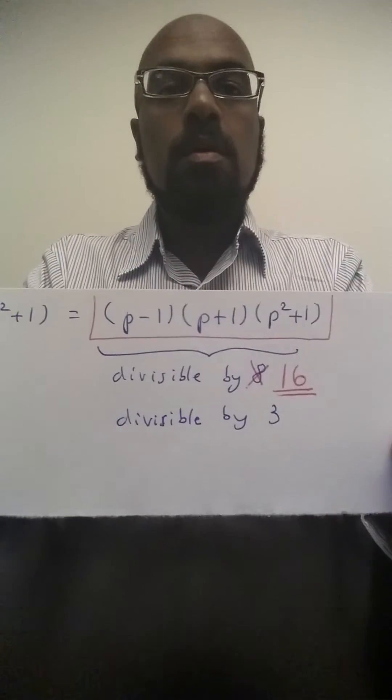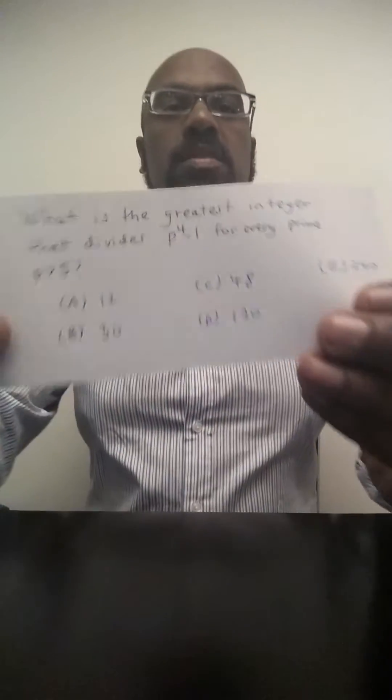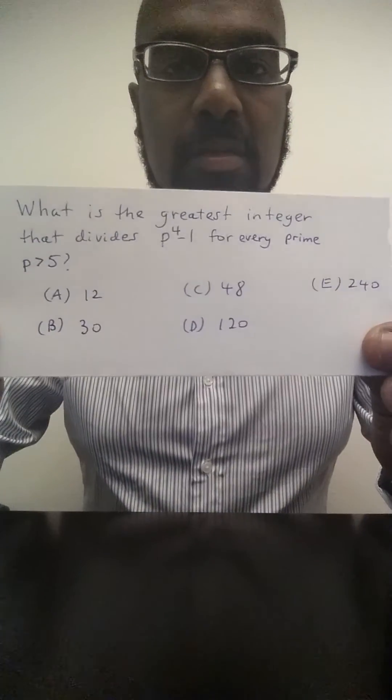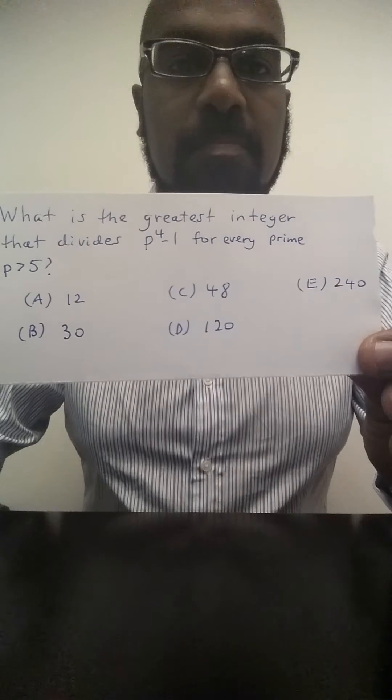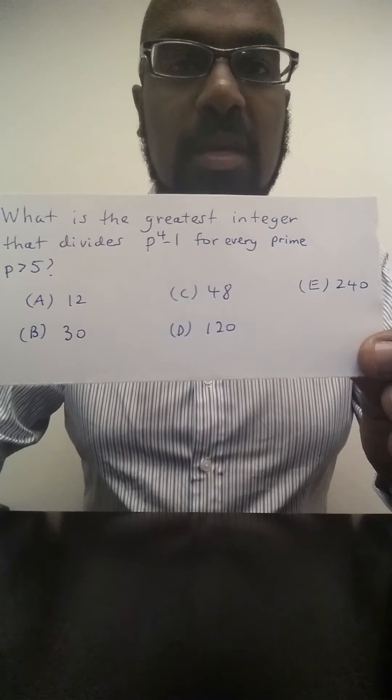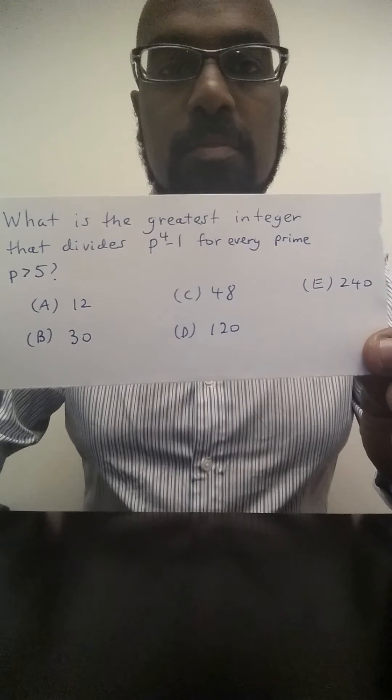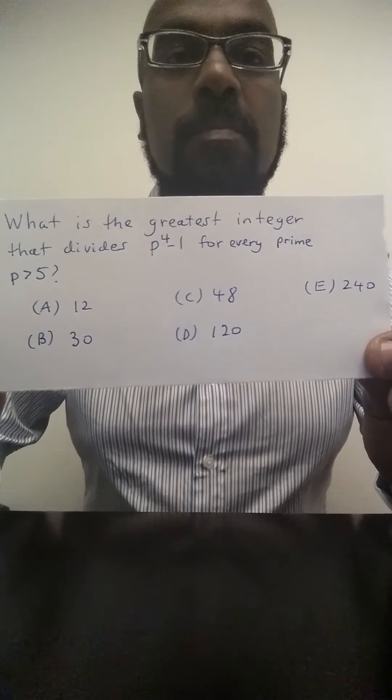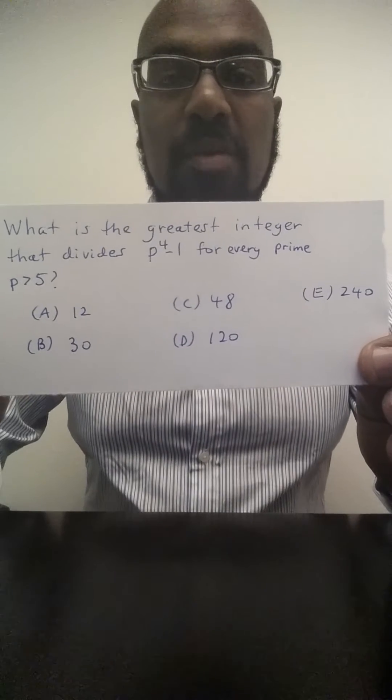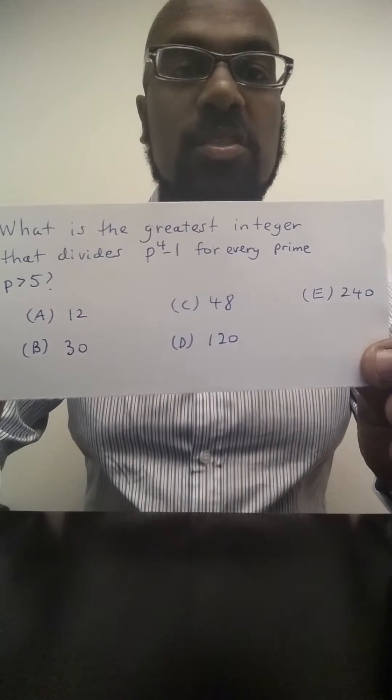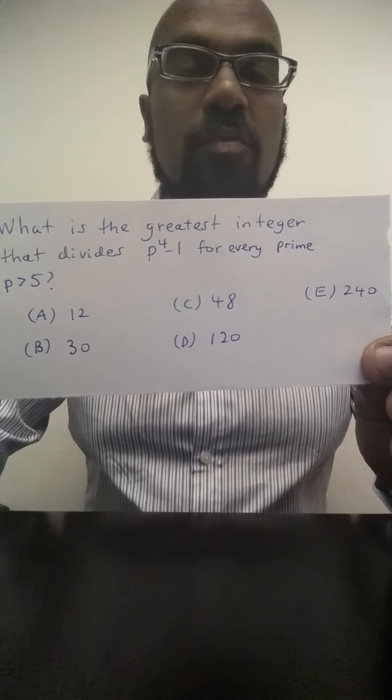Okay. Now that's great. We're on our way. According to the answer choices, we've ruled out 12 and 30 and now we have 48, 120 and 240 left. In fact at this point we can rule out 120 because we know 48 is a common factor of everything. 48 doesn't divide 120. So the answer is going to be either 48 or 240.